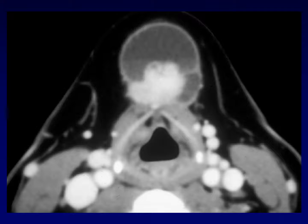One of the problems with thyroglossal duct cysts is the risk of transformation into thyroglossal duct carcinoma. This occurs very rarely — less than 1% of thyroglossal duct cysts will transform. The demographics mirror thyroid cancer rather than thyroglossal duct cysts: thyroid cancers and thyroglossal duct carcinomas tend to occur in adulthood, whereas thyroglossal duct cysts tend to present in childhood. The findings that suggest thyroglossal duct carcinoma are calcifications within the lesion and mural nodularity. Infection will occasionally mimic this appearance, but it's still best to suggest that diagnosis.